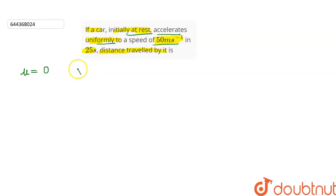So the final velocity v is equal to 50 meters per second, and let the acceleration of the car be a. It is given that time is equal to 25 seconds, so t equals 25 seconds.